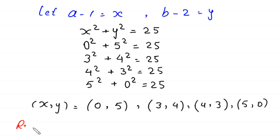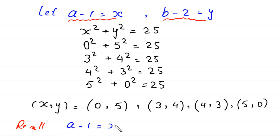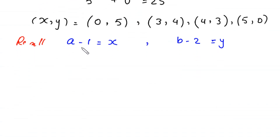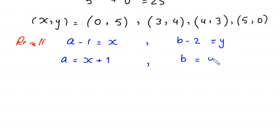Recall that a minus 1 equals x and b minus 2 equals y. Moving the negative 1 to the right-hand side gives a equals x plus 1, and moving the negative 2 to the right-hand side gives b equals y plus 2. Using these two equations together with the values of x and y, we can find the values of a and b.